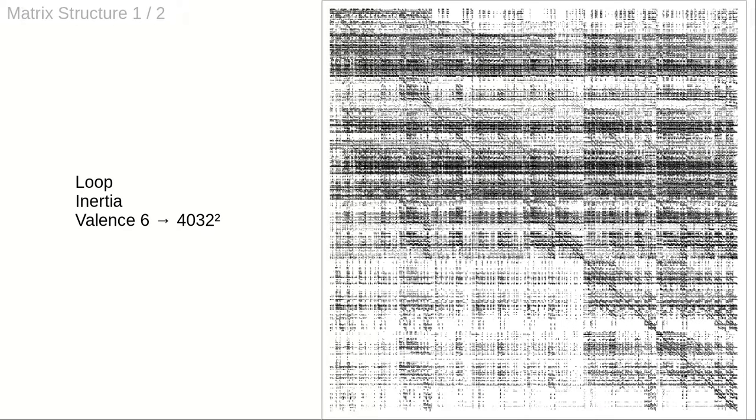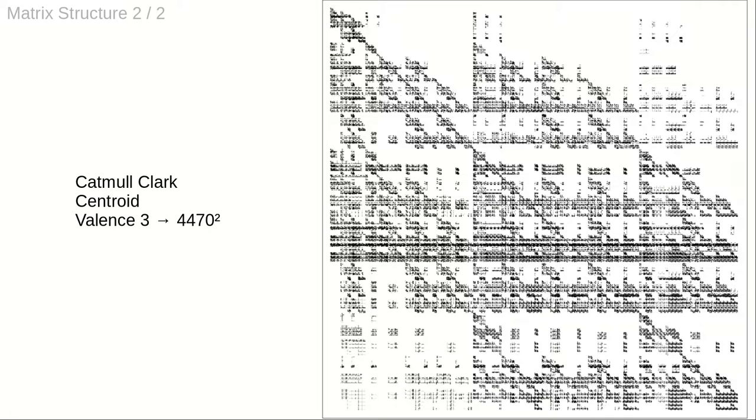Here, we display the matrix for the loop inertia homogeneous case. The second example shows the non-zero coefficients of the linear system that determines the Catmull-Clarke valence 3 centroid form.